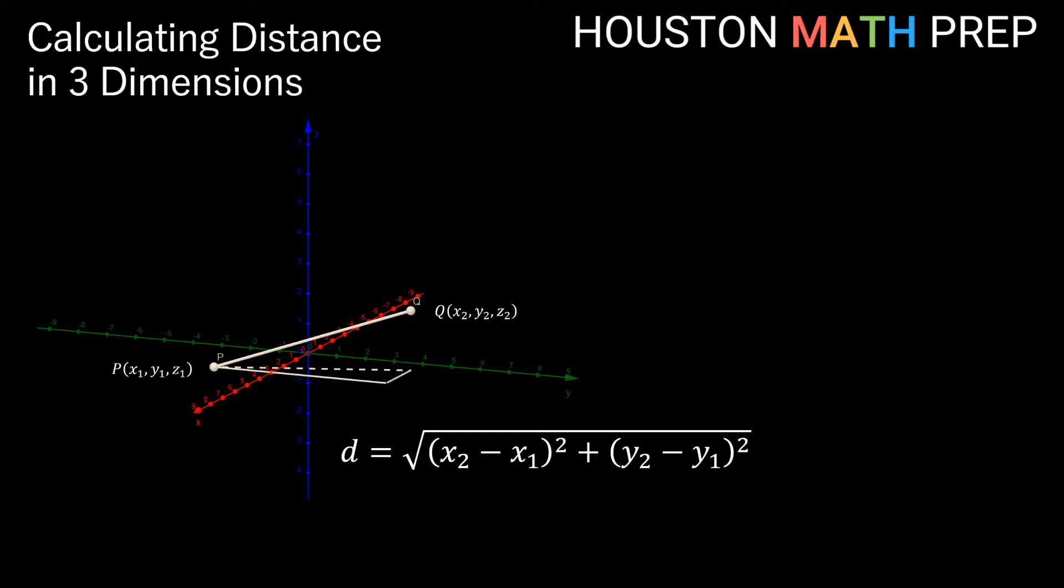So if we remember this formula, and even if you don't, we have it here for you, then that gives us the length of this dotted line that runs horizontally from P to the point that is directly below Q. What we'll do now is complete this sort of vertical right triangle that we've already started building here. And the other leg of this triangle will just be the vertical distance between the two. We can find this just by taking z2 minus z1.